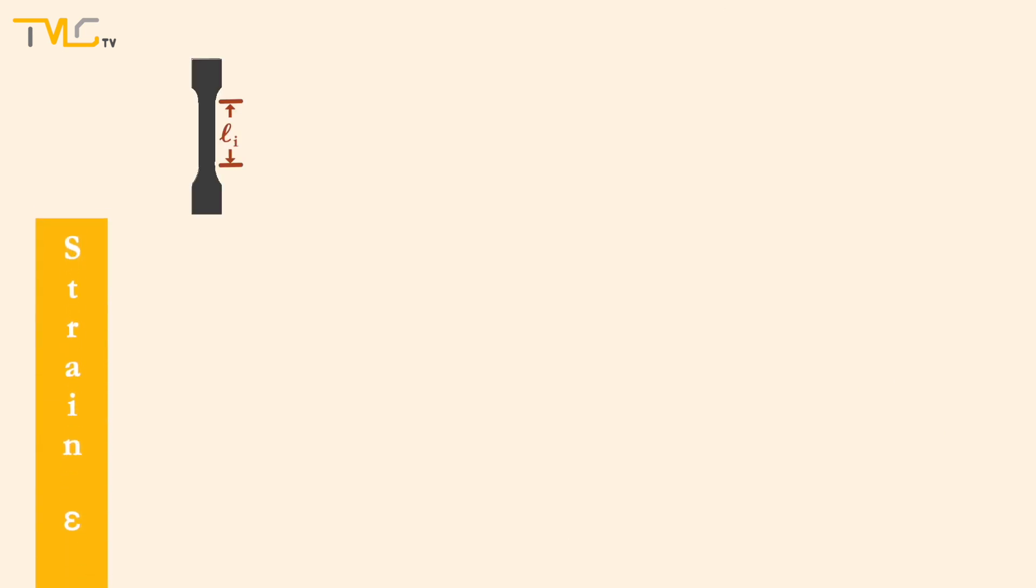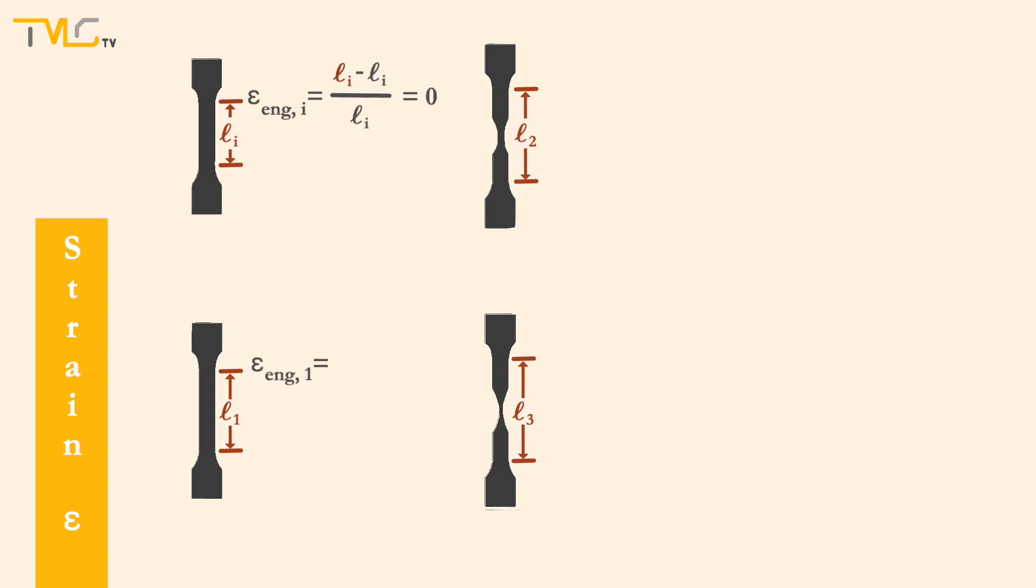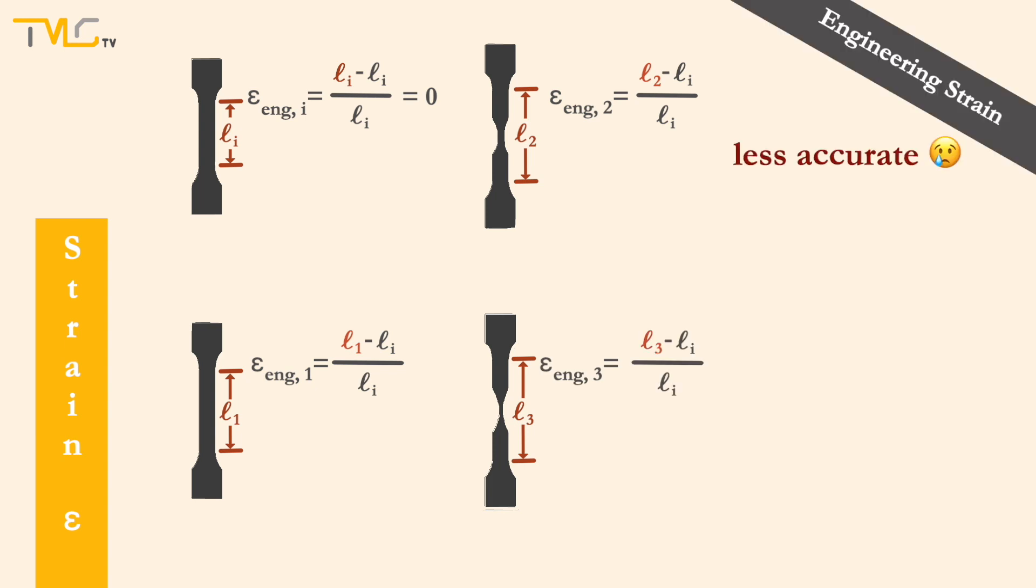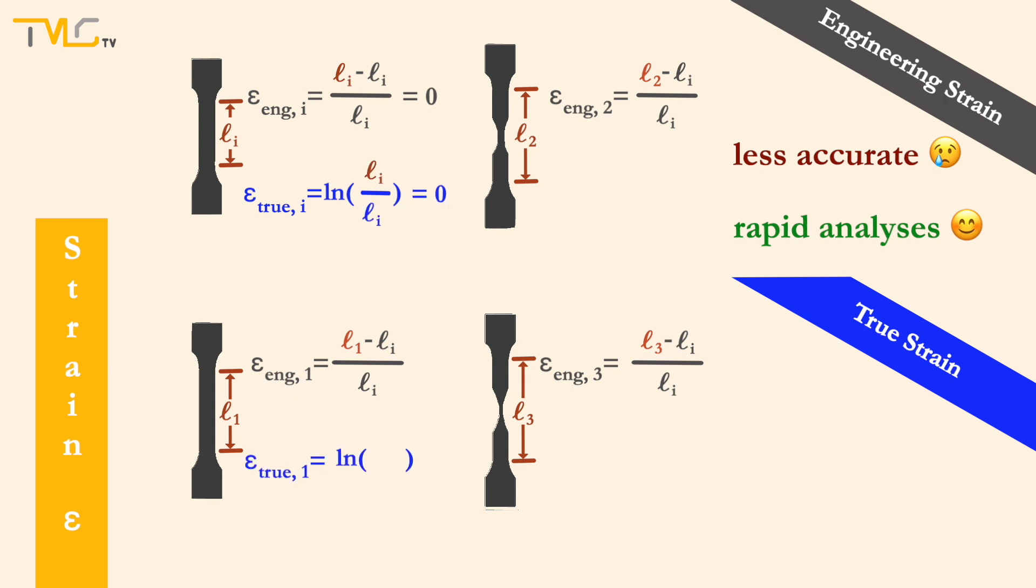Strain is calculated by dividing the instantaneous elongation of the specimen to its initial gauge length. The strain value calculated by this method is called the engineering strain. Same as engineering stress, it is less accurate but more practical for rapid calculations. There is also true strain, which is equal to the natural logarithm of the ratio of the instantaneous gauge length of the specimen to its initial gauge length.